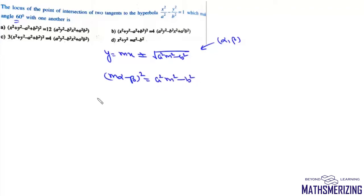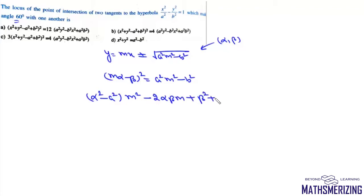Expanding, we get (α² - a²)m² - 2αβm + (β² + b²) = 0. This quadratic equation has two real roots m₁ and m₂.